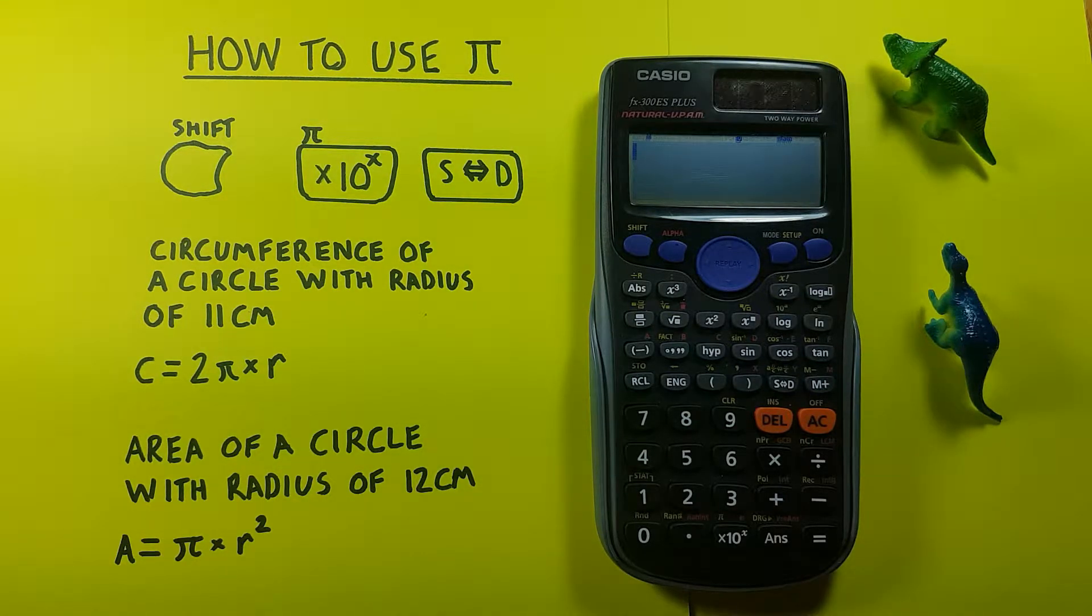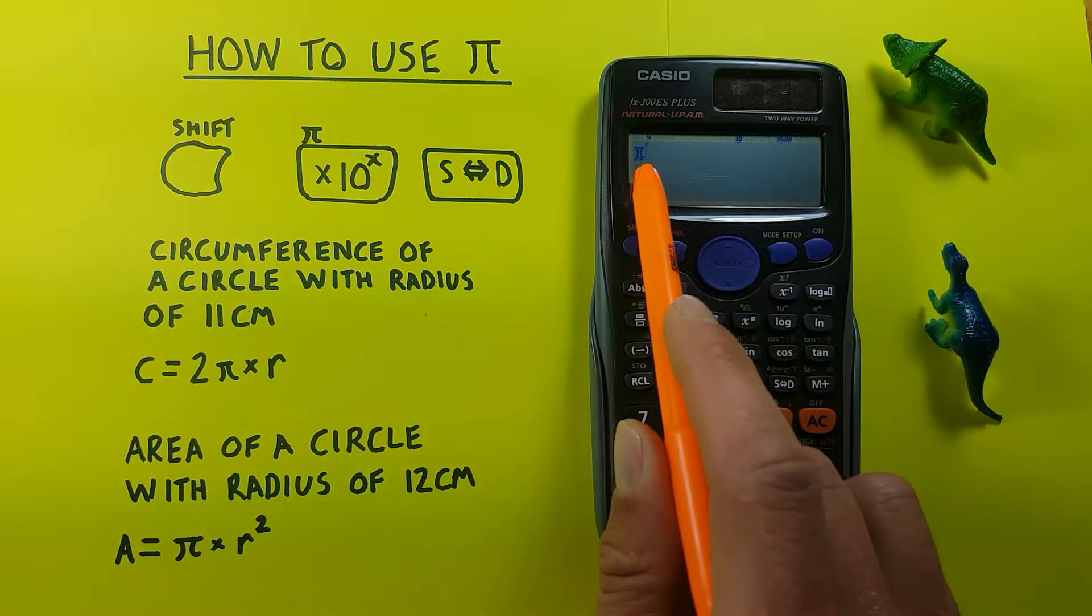So to place Pi on the screen what we want to do is press shift and then this times 10 to the power of x key. There you go, you can see the Pi is on the screen.